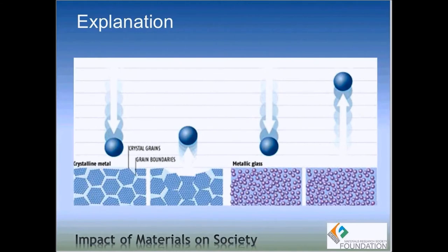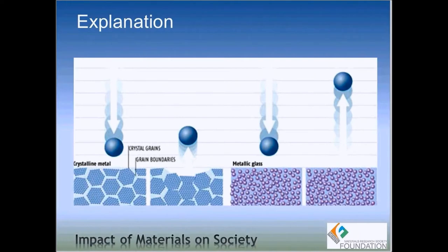For most practical crystalline metals, we have grains joined at regions called grain boundaries, which are a type of crystalline defect with higher energy. When a steel ball hits a crystalline metal, part of the energy is transferred to the base and used in rearranging these defects — so part of the energy is lost and dissipated. But in amorphous metal there are no such defects like grain boundaries, so most of the impact energy is stored in the material and transferred back to the ball, which is why it bounces higher and keeps bouncing longer.